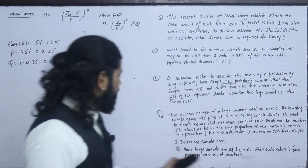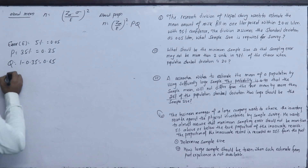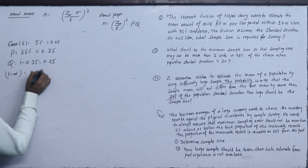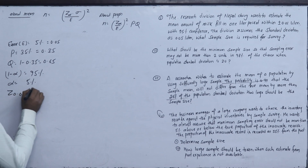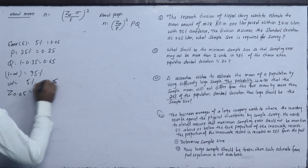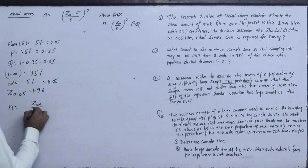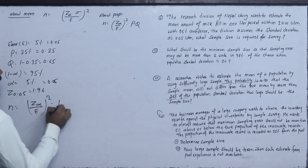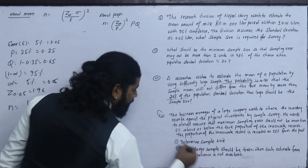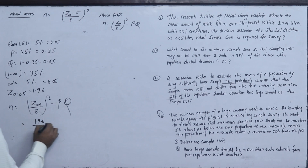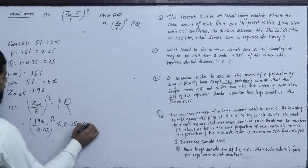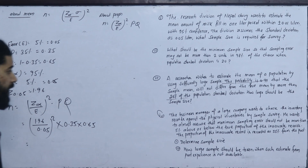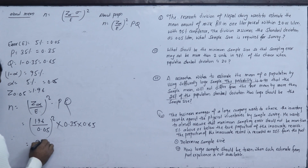The confidence level is 95%, so alpha = 5% and z = 1.96. Using n = (z-alpha / e)² × P × Q = (1.96 / 0.05)² × 0.35 × 0.65 ≈ 349.59, so approximately 350 samples.